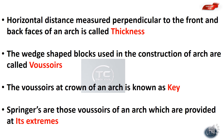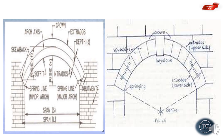The wedge-shaped blocks used in the construction of arches are called voussoirs. The voussoir at the crown of an arch is called the key or keystone. Springers are those voussoirs of an arch which are provided at its extremes.